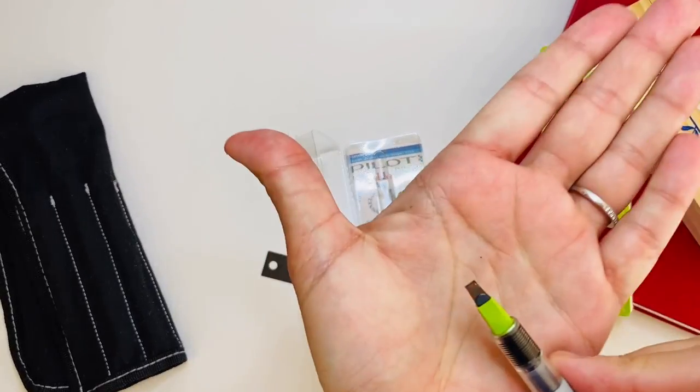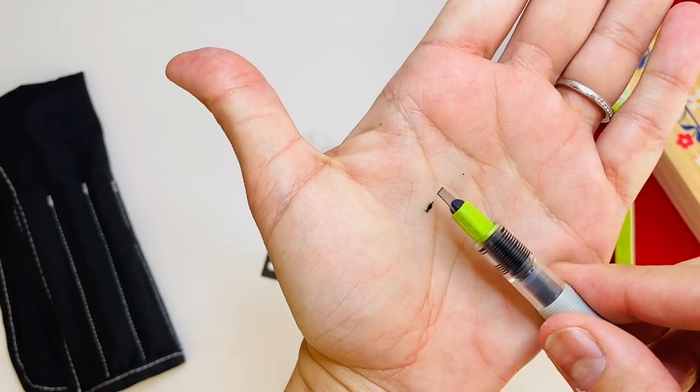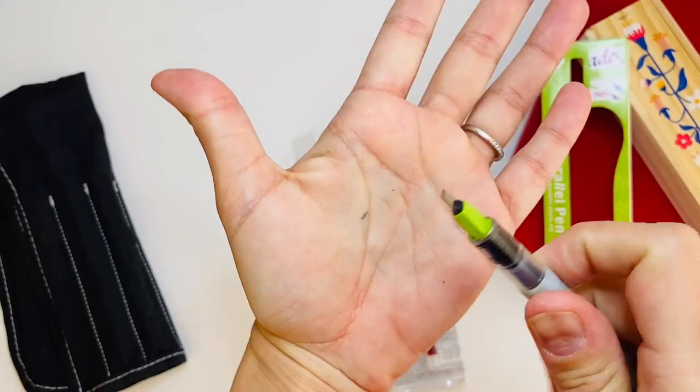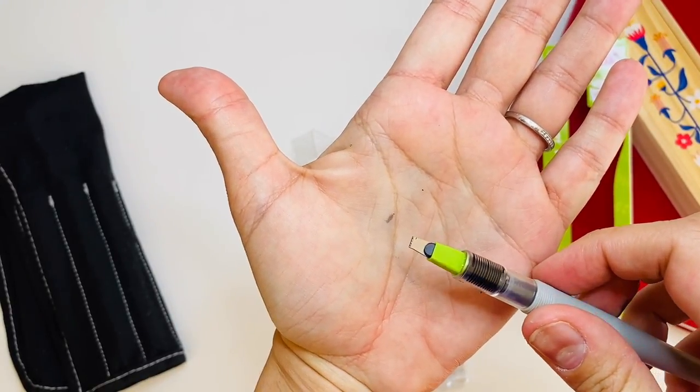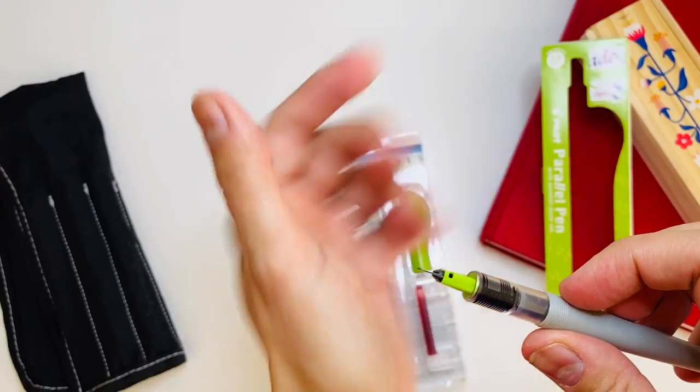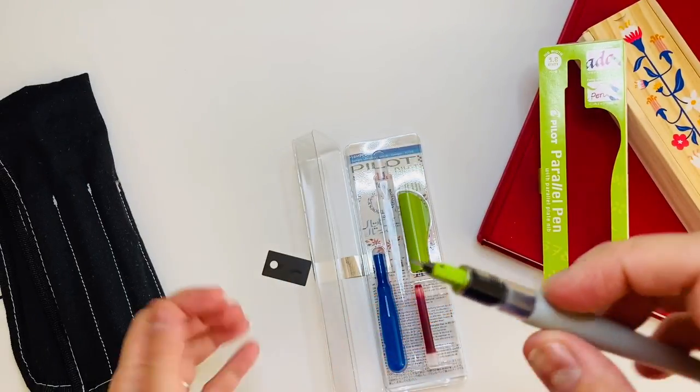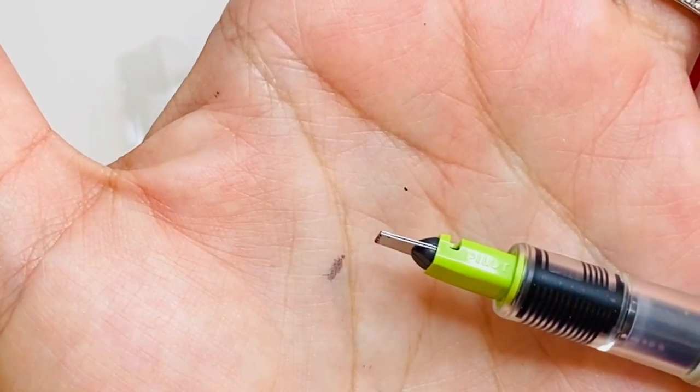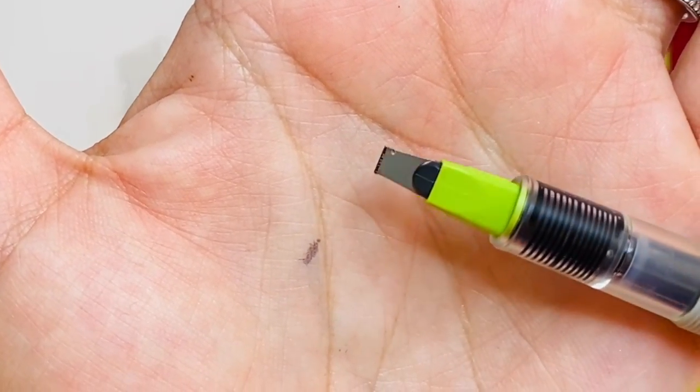So the pen nib is actually two pieces of—got some ink on my finger there—two pieces of steel and the ink flows right through the middle of the two pieces of steel. I don't know if you can see that. So it's very different than a regular fountain pen.